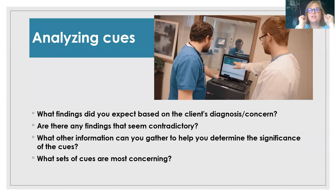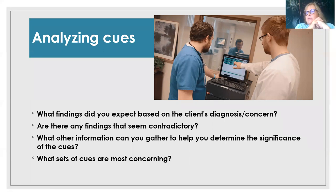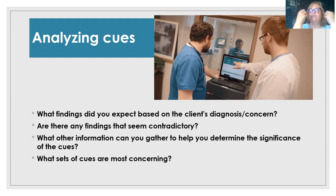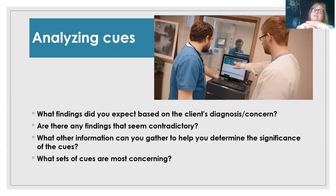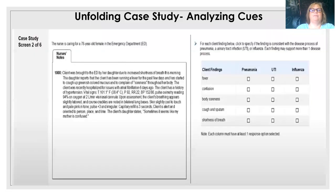We've assessed our patient and situation, and now we need to analyze those cues. What do they tell us? What did we expect based on our client's condition? Are we surprised when she's coughing up green phlegm and has crackles in her bases? Not really — fever and green sputum automatically start us thinking about an infective process. What other information can we gather to determine how significant those cues are? And how do we bring sets of information together into one clinical picture instead of thinking of 100 separate pieces of information?